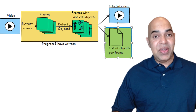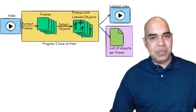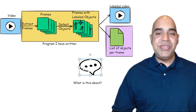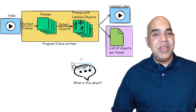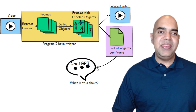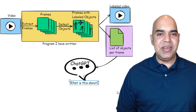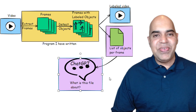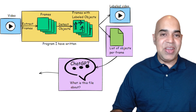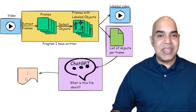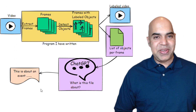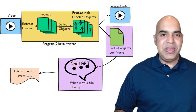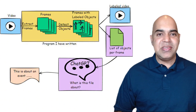Once we have the text file with all the object labels, we can upload it to ChatGPT to explain the events of the video. We will check if the YOLO v8 detected objects make sense to ChatGPT and if the ChatGPT response makes sense to us.